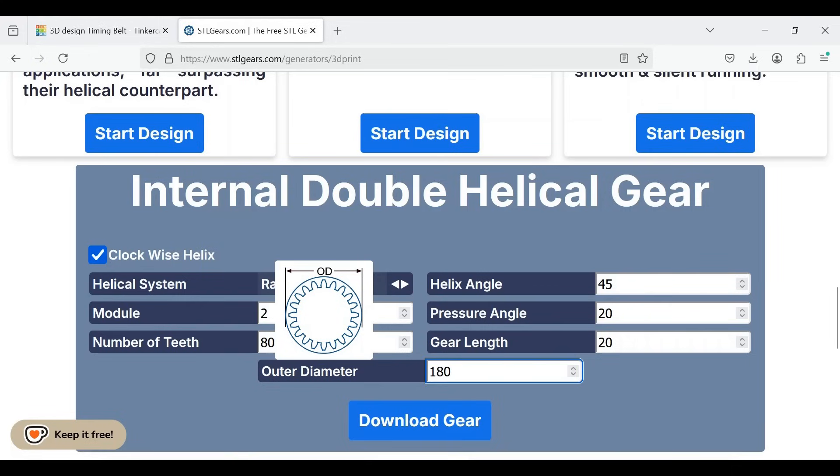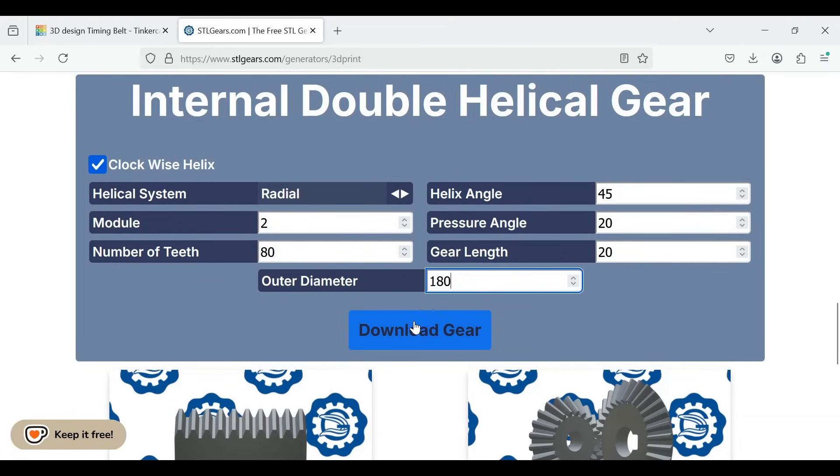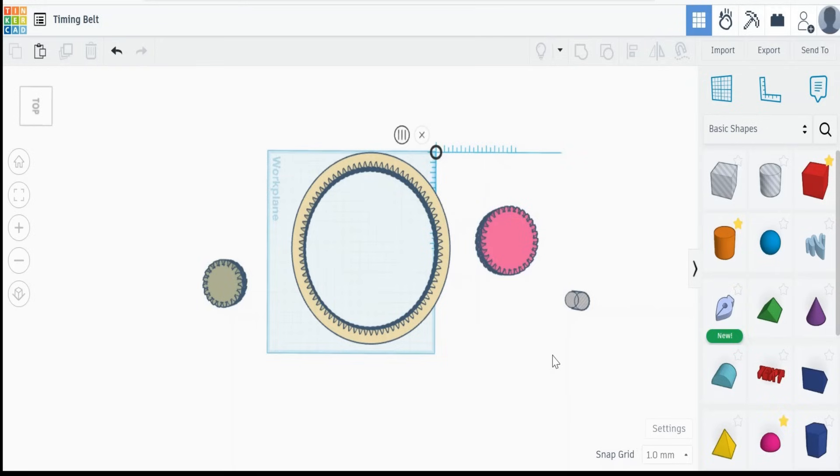And I'm going to put in an outside diameter of 180. If you put in the wrong outside diameter, it won't let you actually download the gear. You have to increase the diameter until the gear is valid. And then you click it, and it will download that gear for you. And there they are all downloaded.